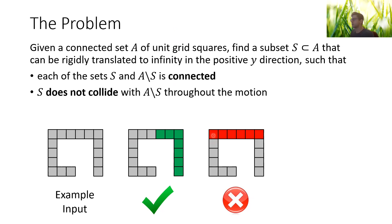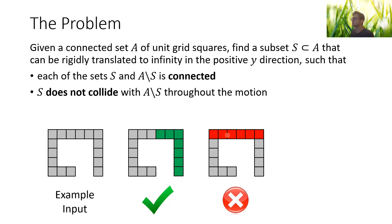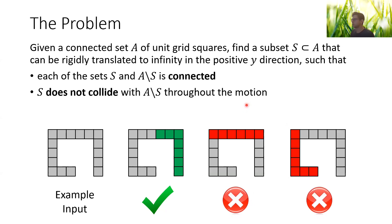On the other hand, the red set of squares is not a valid solution, because if we remove it from the assembly, we get two parts that are not connected. And another example of a solution that is not valid is this red set of squares here, because they would collide with the complement.